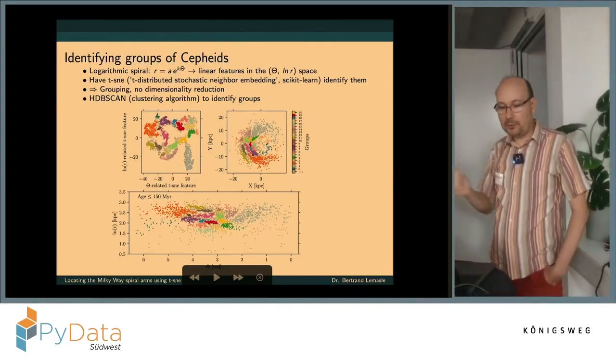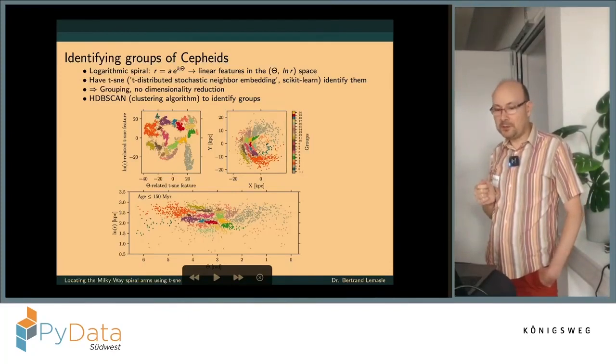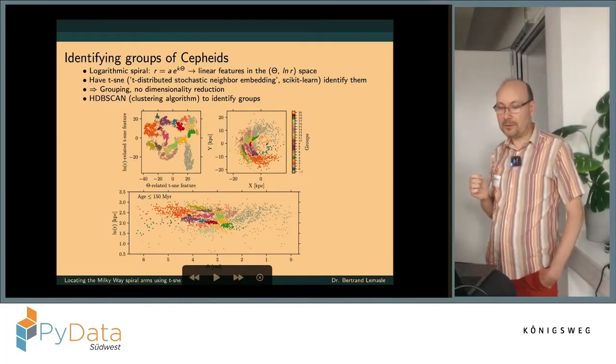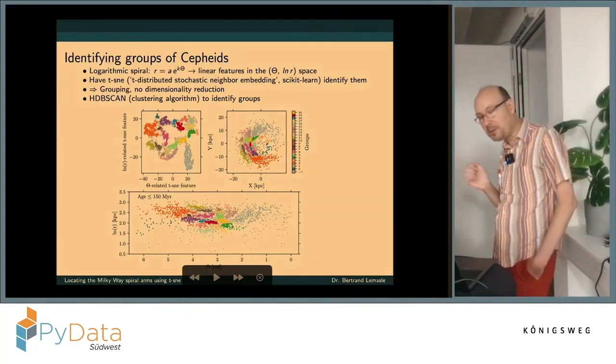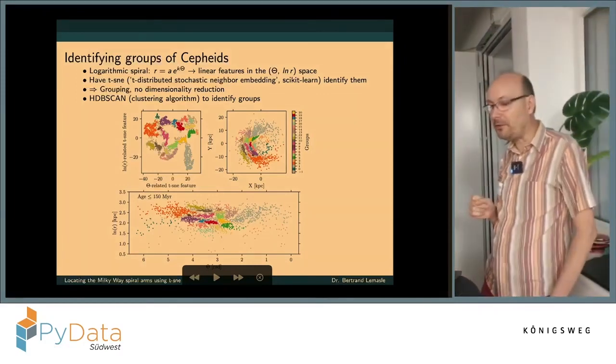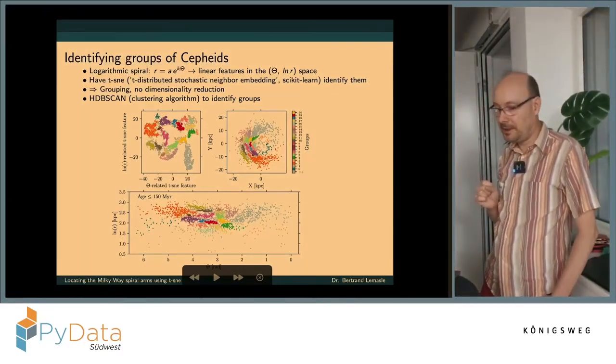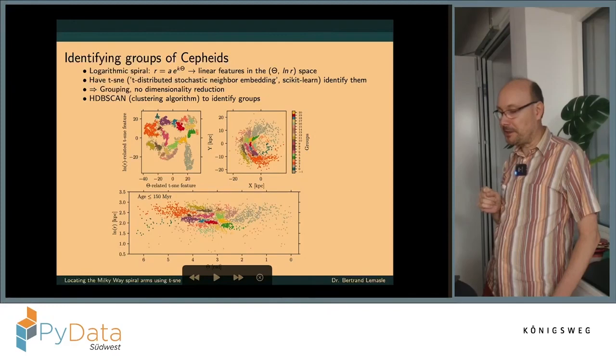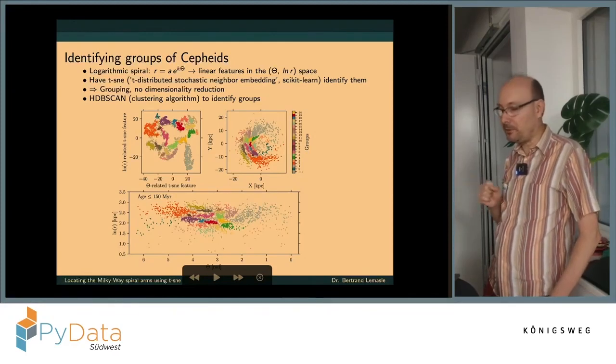And then the idea is you try to use T-SNE, which is a dimensionality reduction algorithm, to try to identify groups of Cepheids, hoping it will do better and especially not biased like a human would be.